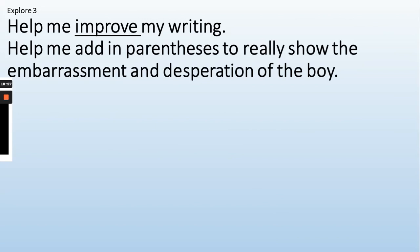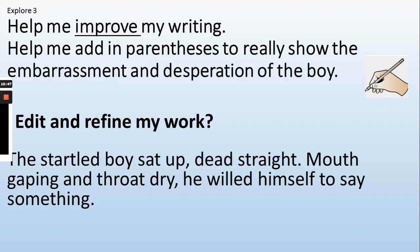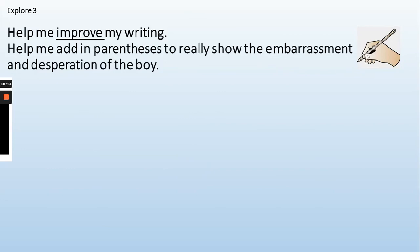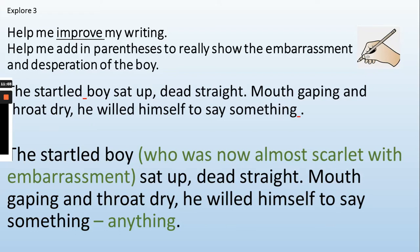Now can you help me improve my writing? I need help adding parenthesis to really show the embarrassment and desperation of the boy. 'The startled boy sat up dead straight, mouth gaping and throat dry. He willed himself to say something.' Pause the video and edit and refine my work — add in some parenthesis. Here was my first example, and here's my final version: 'The startled boy, who was now almost scarlet with embarrassment, sat up dead straight. Mouth gaping and throat dry, he willed himself to say something — anything.' I've used brackets to embed information and a dash at the end as an afterthought to add emphasis.